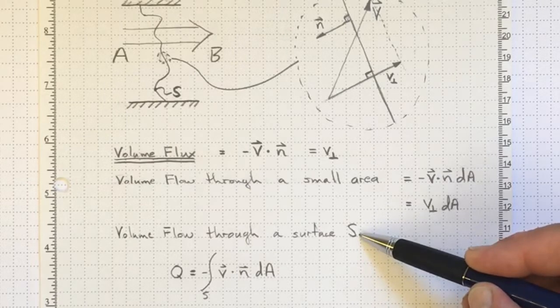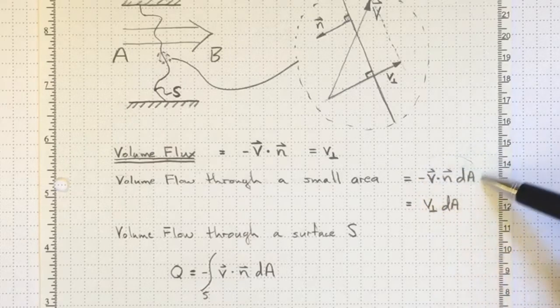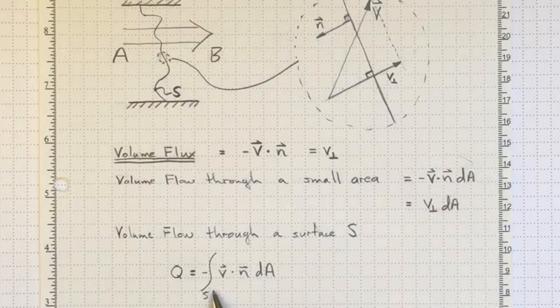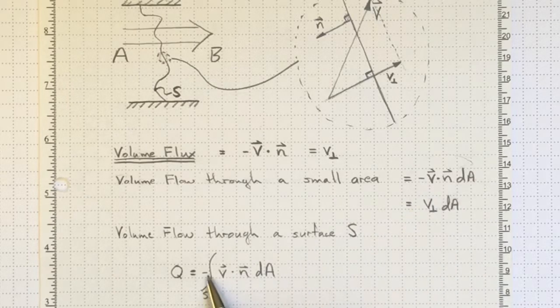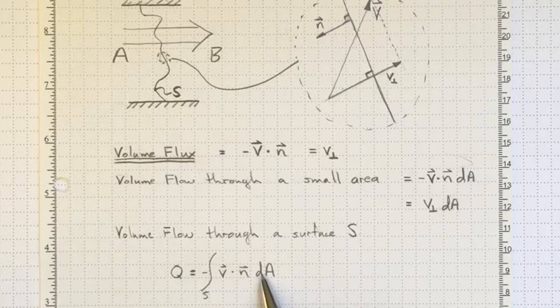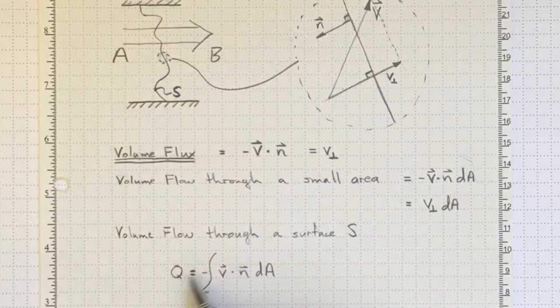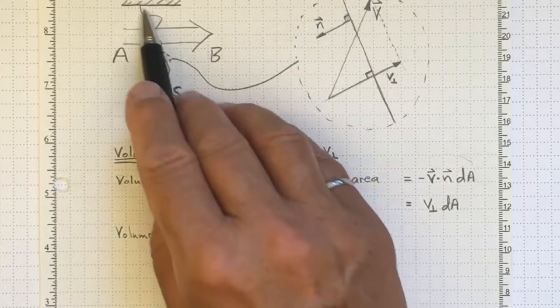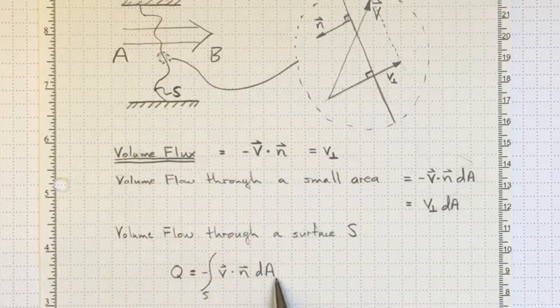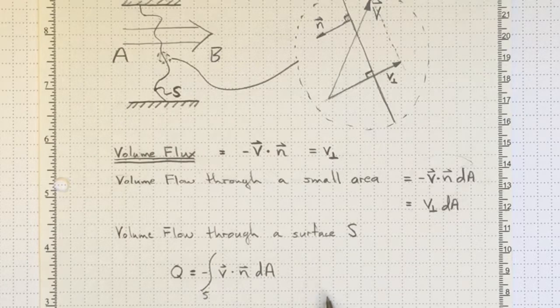The volume flow through this whole surface we'll get by taking this little volume flow through a small surface and integrating it over the whole surface S. So we've still got the negative sign. We've got the V dot N. We've got dA. And we've got to integrate that over all of the little elements of area to get the volume flow. Now that may be geometrically quite complicated, but it's conceptually quite simple. So don't get hung up on the fact that we've got vector dot products and complexity here. Just concentrate on the details.